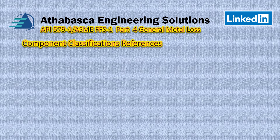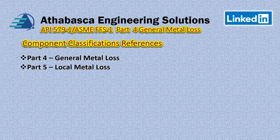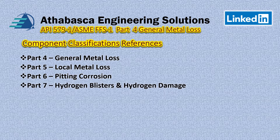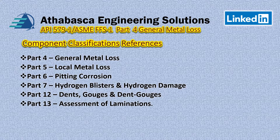The reason we wanted this as a separate video is that there are a lot of different parts in API 579 that reference these component classifications. When I did a literature search, Part 4 General Metal Loss is where the origin of these classes shows up, but they also appear in Part 5 General Metal Loss, pitting corrosion, hydrogen blistering and hydrogen damage, Part 12 dent gouges, and Part 13 the assessment of laminations.